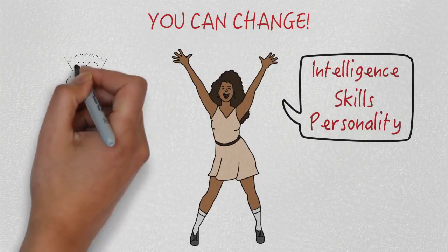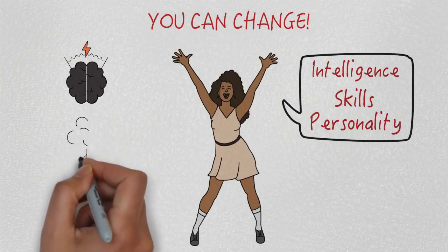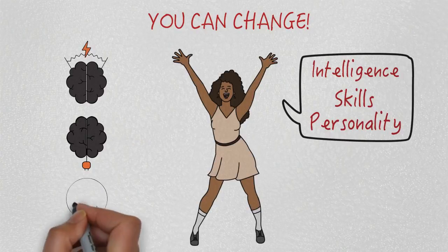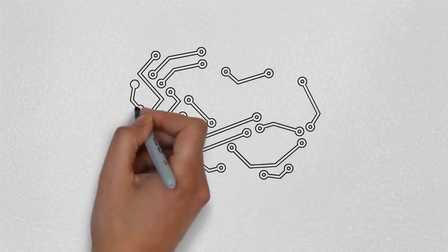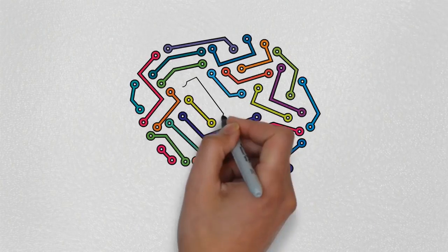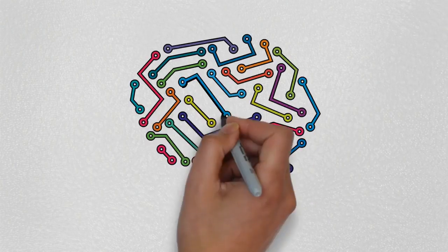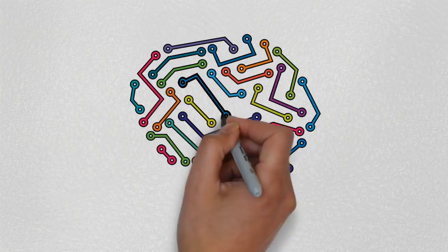We can literally train our brains to become cleverer, to learn a new talent, or to think differently in situations. So to change ourselves, we need to change our brains by creating new connections and practicing them until they become strong and automatic.